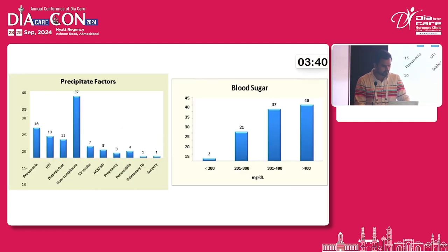Precipitating factors: most commonly it was poor compliance, followed by pneumonia, and then UTI, diabetic foot, cardiovascular stroke, MI, pregnancy, pancreatitis, pulmonary TB, and surgery.